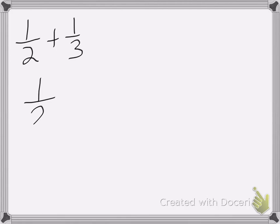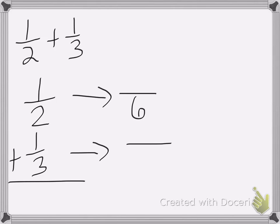So I have 1 half plus 1 third, and I need to change both of these denominators into 6, because 2 goes into 6 and so does 3.